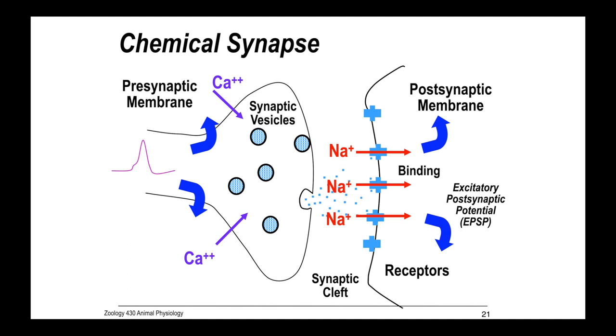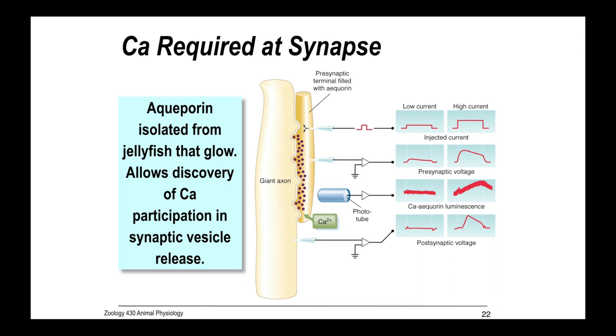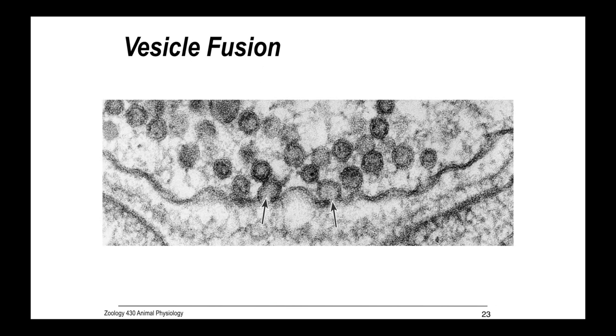The fact that calcium is required at synapses was demonstrated using the giant axon of jellyfish, using aquaporin that glow. Isn't that cool? The fact that these aquaporin glow, when they're functioning, allowed them to use a photo electrode to measure luminescence that allowed the discovery of calcium participation in the synaptic vesicle release. Here's an electron micrograph of vesicle fusion at the synapse. You can actually see it happening.